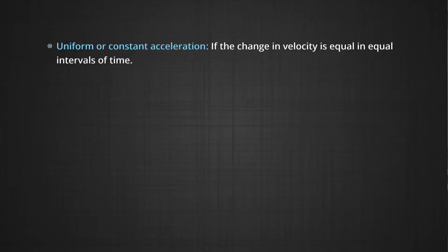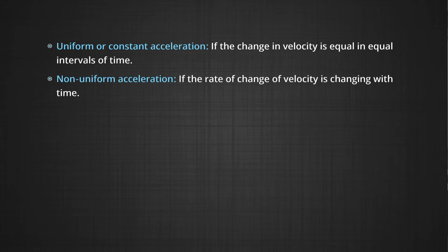Acceleration is uniform or constant if the change in velocity is equal in equal intervals of time. This is also called uniform or constant acceleration. Non-uniform acceleration, on the other hand, occurs when the rate of change of velocity is changing with time, which means the change in velocity is not equal in equal intervals of time.